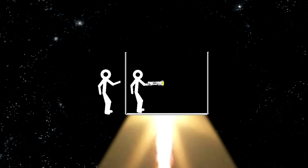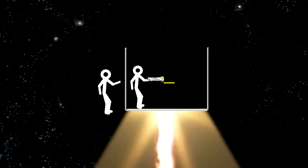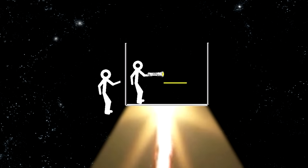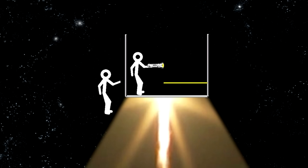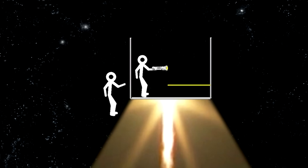And when the person in the elevator turns on the flashlight, the person outside the elevator sees the light travel in a straight line as before. He sees that it's the elevator's wall moving up that causes the light to hit it at a lower point. The light does not bend.